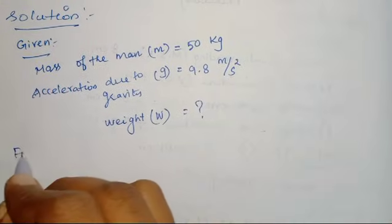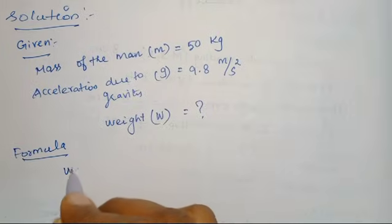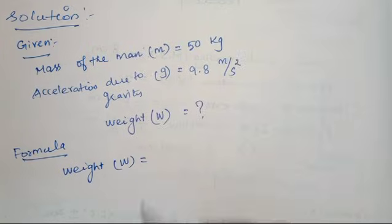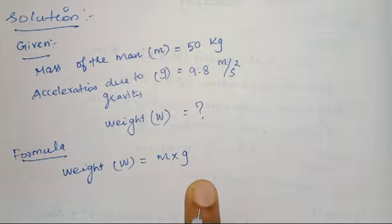Next, let me move on to the formula. As we all know the formula: weight W is equal to mass into gravity. W is equal to mg.